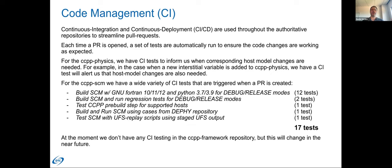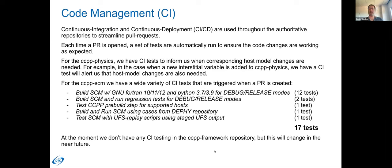Another new test recently implemented tests the UFS replay capability in the single column model — the ability to create and run the single column model with UFS output. This CI test goes through the entire workflow: checks out the single column model, builds the stack, downloads UFS regression test output, and runs the creation scripts to create the cases. The idea is that if the UFS ever changes their output formats, this test will start breaking and we'll be alerted to reconfigure our interface. We don't have any CI testing in the framework repository at the moment, but that will change in the coming weeks and months.